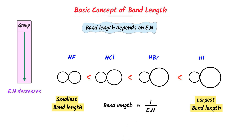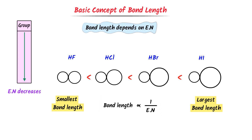From this example, we conclude that bond length is inversely proportional to electronegativity difference. If electronegativity difference increases, bond length decreases. If electronegativity difference decreases, bond length increases. Note down this first concept of bond length.